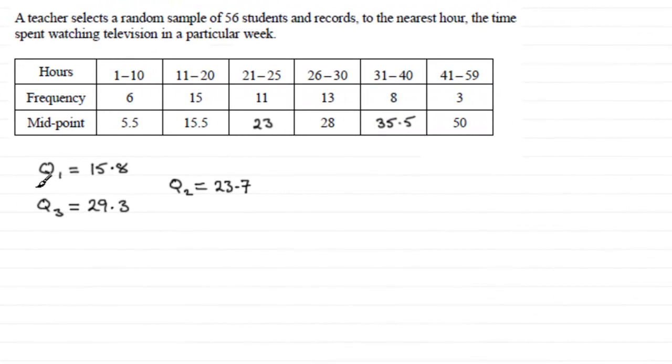Now we're told that the teacher worked out that the lower quartile, Q1, was 15.8 and the upper quartile, Q3, was 29.3. And we're asked to describe the skewness of the data here.